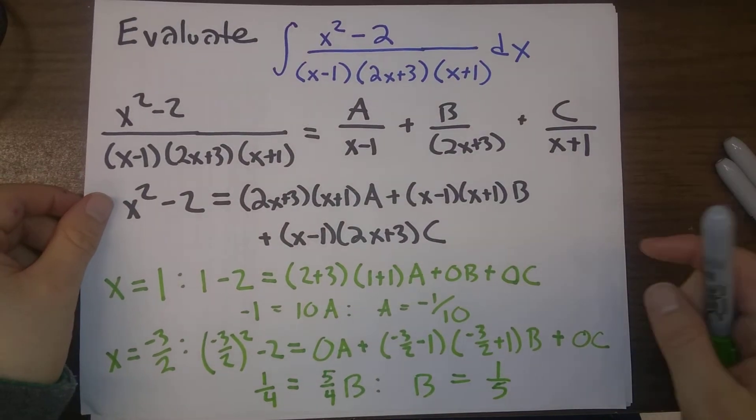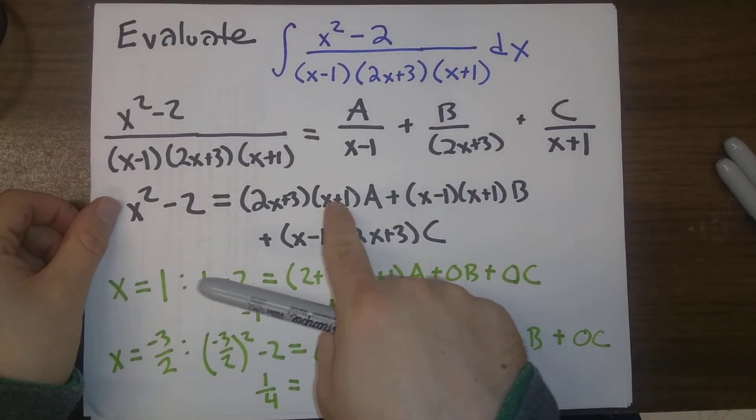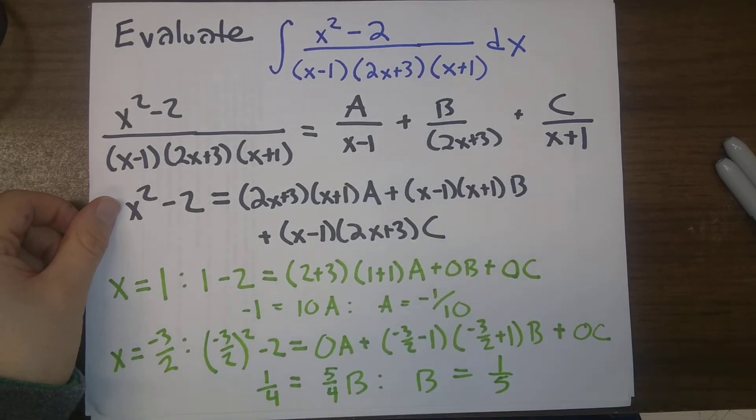Okay, so 2 down, 1 to go. Our final choice, before I go to the new slide, let's see here. If we set x is equal to minus 1, we'll get rid of the A and the B terms and leave it only with the C term.